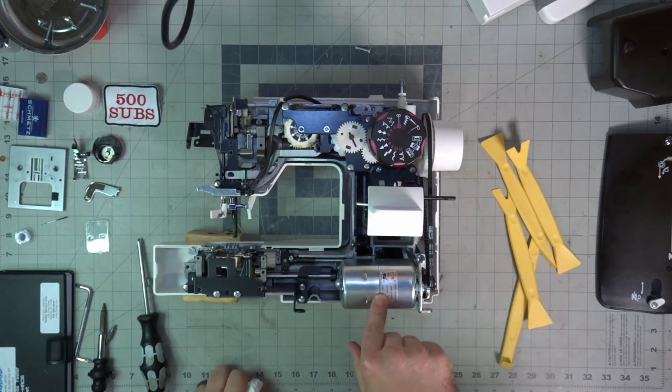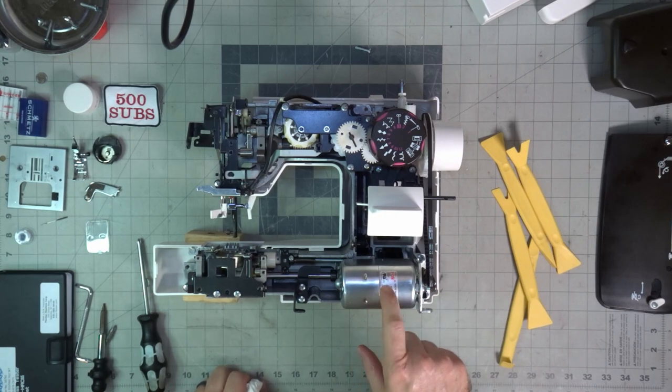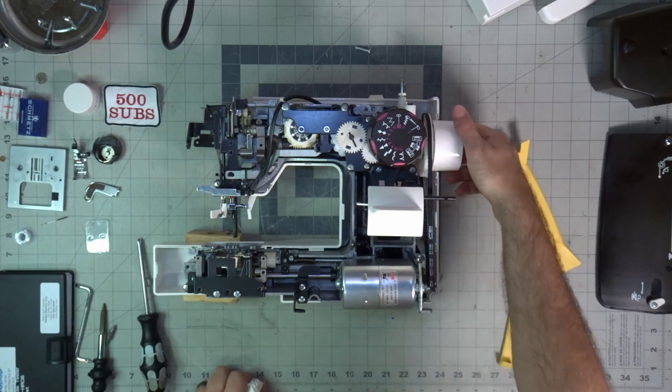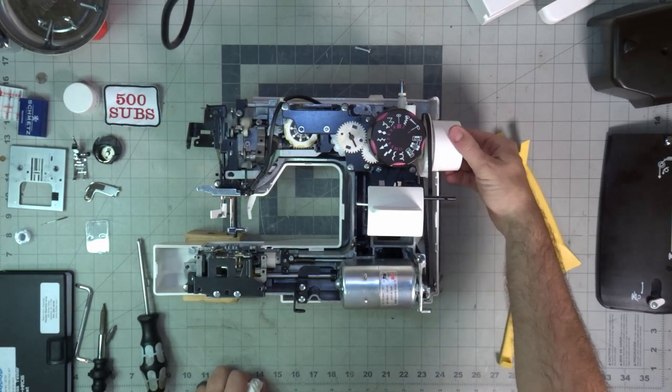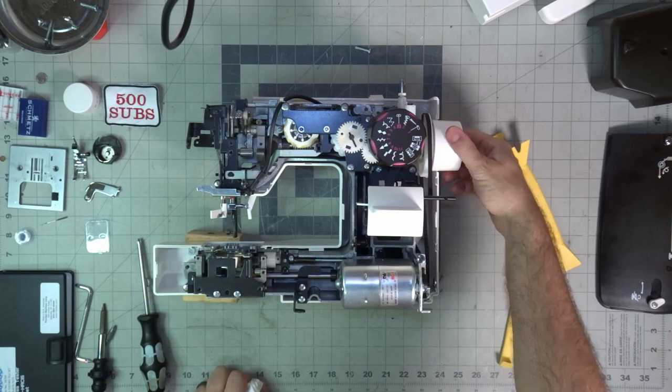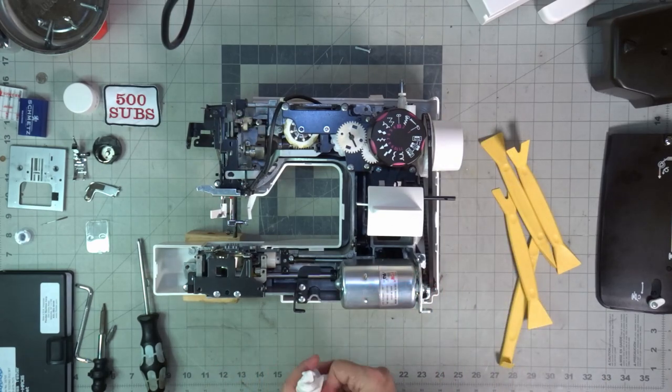Something tells me that 0.46 amps would be a continuous running current. But, we'll see how we compare to that 0.46 amps and see how long this motor is going to last while we use it.